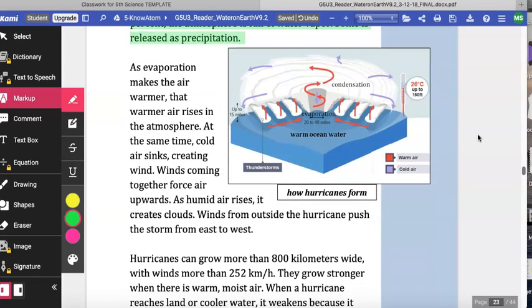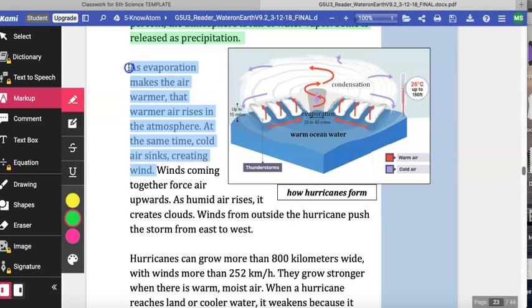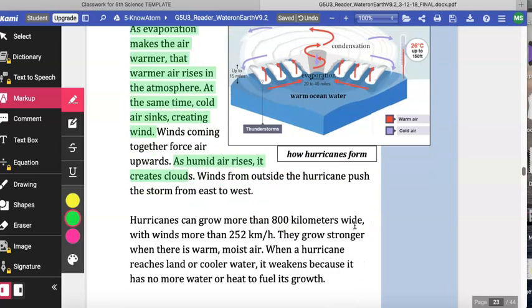As evaporation makes the air warmer, that warmer air rises in the atmosphere. At the same time, cold air sinks, creating wind. Winds coming together force air upwards. As humid air rises, it creates clouds. Winds come from outside the hurricane, push the storm from east to west.